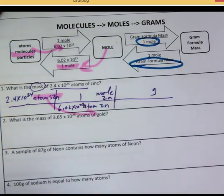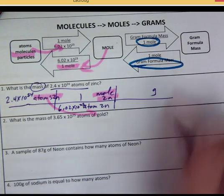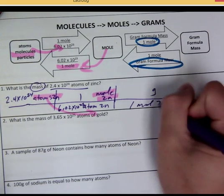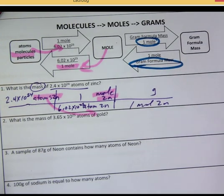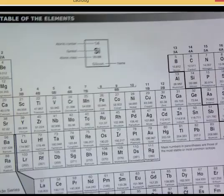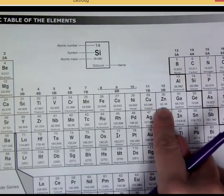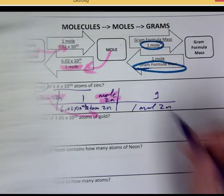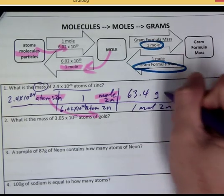Then we have mole of zinc here. We can go 1 mole of zinc is equal to how many grams? And for grams, where do we always go? The periodic table. There it is. 63.4 grams. 63.4 grams of zinc.